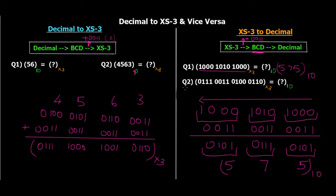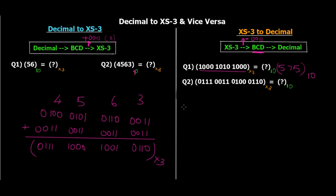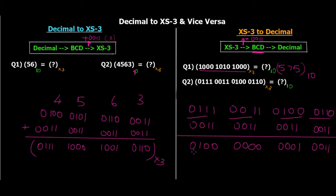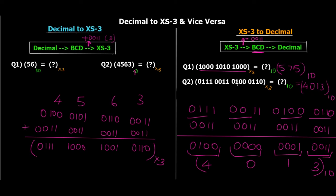Let's see a longer XS3 to decimal example: 0110 0011 0100 0110. Make groups of four — four blocks. Subtract 0011 from each: 0110−0011=0011 (3); 0100−0011=0001 (1); 0011−0011=0000 (0); 0110−0011=0100 (but wait — that gives: 6−3=3, 4−3=1, 3−3=0, 7−3=4). Converting BCD blocks to decimal: 0011=3, 0001=1, 0000=0, 0100=4. The final decimal answer is 4013.